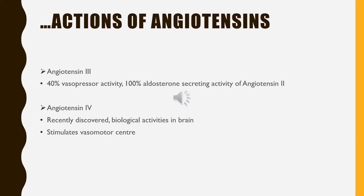Angiotensin 3 also increases blood pressure and stimulates aldosterone secretion, but it has only 40% of the vasopressor activity of angiotensin 2, whereas it has 100% of aldosterone secreting activity. Angiotensin 4 is a recently discovered form having some biological activities in the brain, and it is believed to stimulate the vasomotor center.